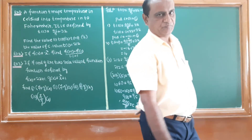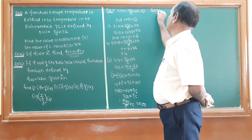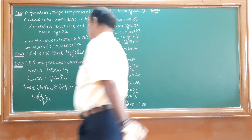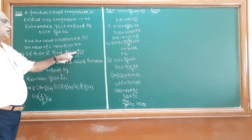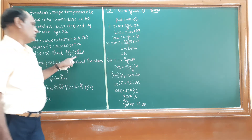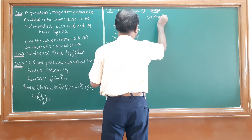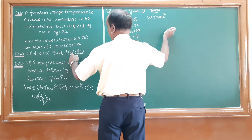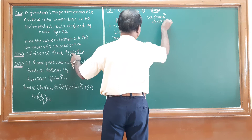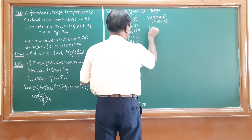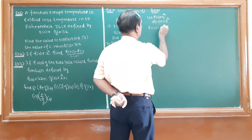Now the second problem: f(x) = x² is given. Find [f(1.1) - f(1)] / (1.1 - 1). First, calculate f(1.1): f(1.1) = (1.1)² = 1.21. Next, calculate f(1): f(1) = 1² = 1.